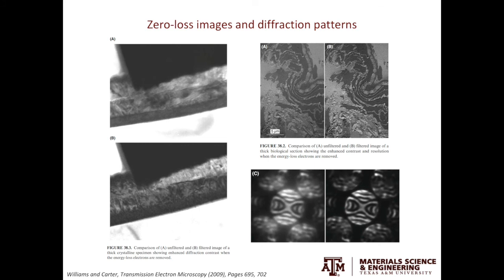The example on the left shows a fairly thick crystalline specimen. The one on the top is a regular TEM micrograph. The one on the bottom is only formed using the zero loss peak — only the direct electron beam and the elastically scattered electrons. The inelastically scattered electrons are filtered away. You can see a dramatic improvement in this image compared to the previous one. The same technique can be applied to amorphous materials as well, to simultaneously improve resolution and contrast.